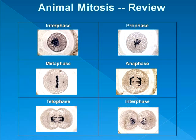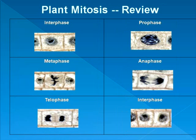For a plant cell, the process is the same: interphase, prophase, metaphase, anaphase, telophase, and then two sister cells in interphase. But with a plant cell, there is one more step where the cell wall is formed between the new sister cells, which is not needed in an animal cell.